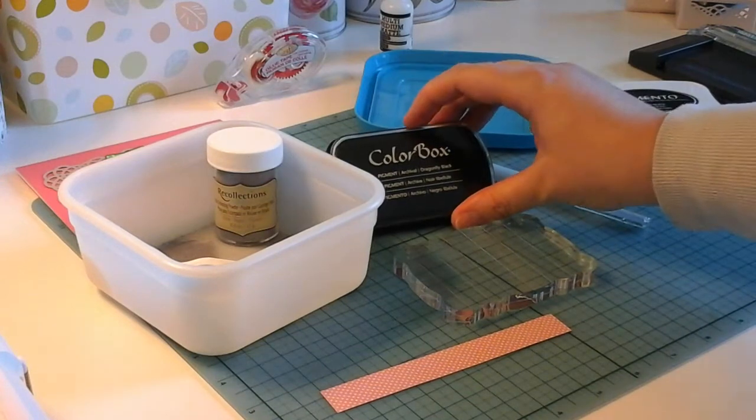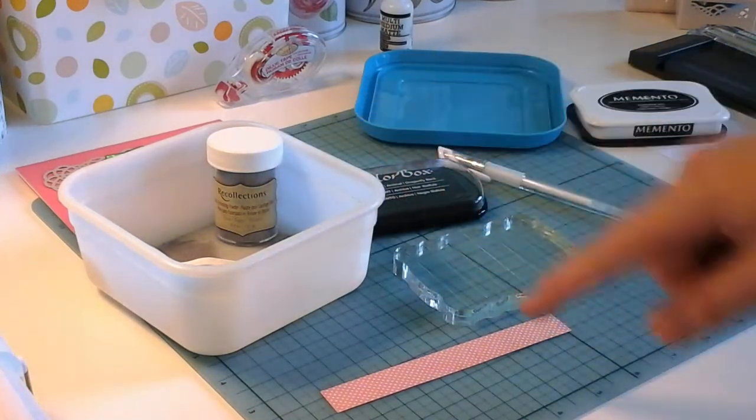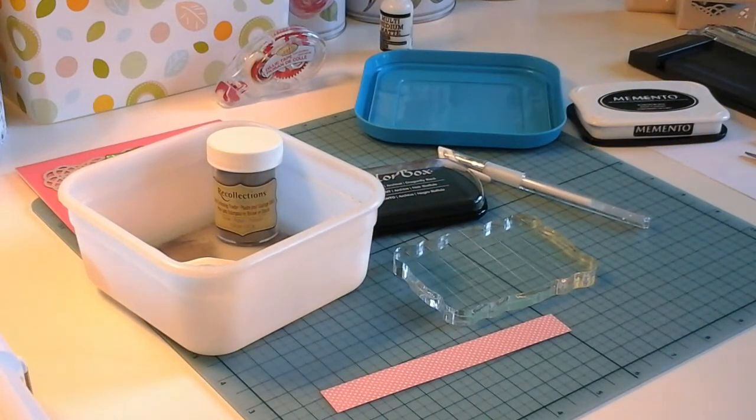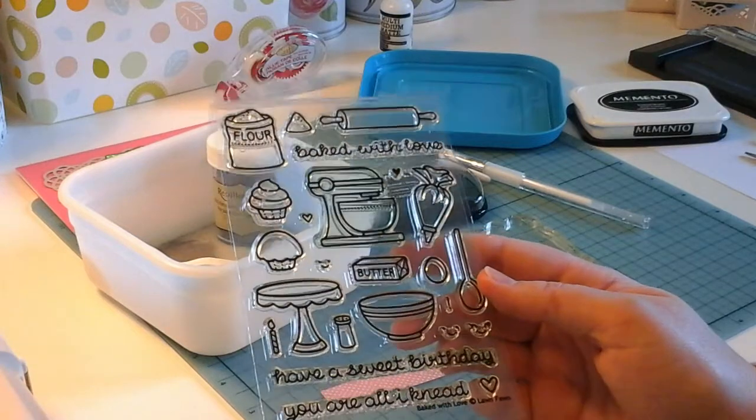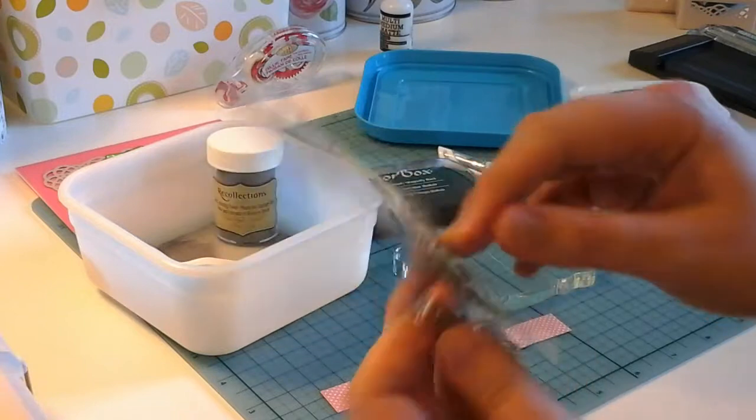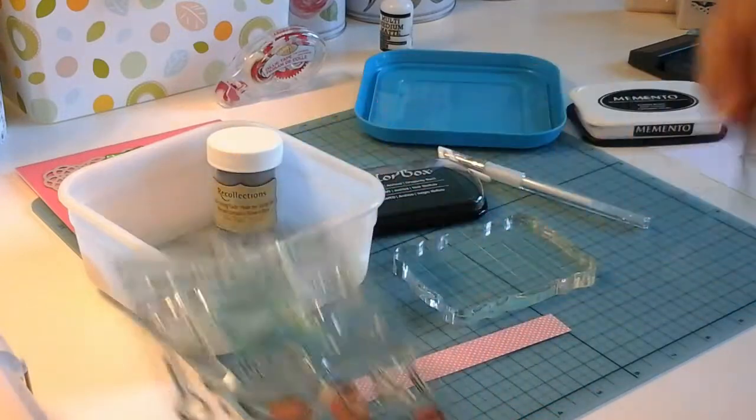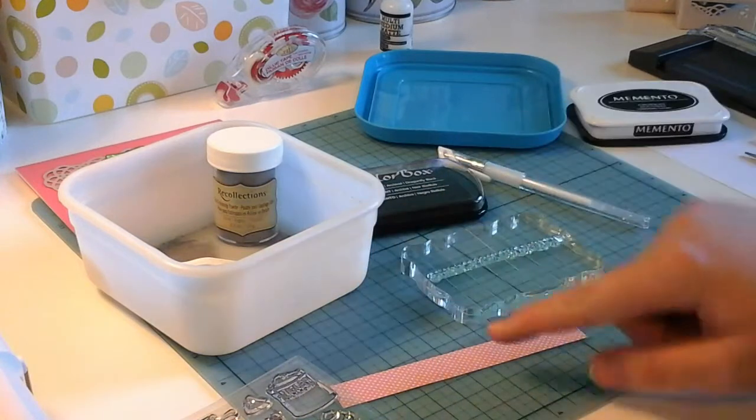This doesn't dry as fast as other inks, so I'll be able to heat emboss with it. And of course you could also use your Versamark ink for this. So from that same Lawn Fawn stamp set, the Baked with Love, I'm going to use the Have a Sweet Birthday. I'm just going to put that onto my stamp block and then stamp that with the black.